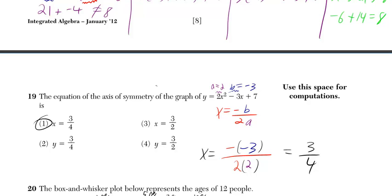The easiest way to do the equation of the axis of symmetry when you have something that's in this form of ax squared plus bx plus c is to find out what your a value is, it's always the number in front of the x squared. Find out what your b value is,